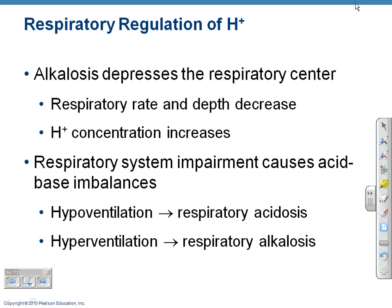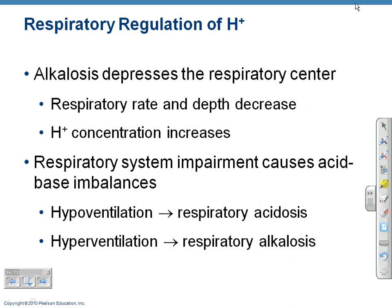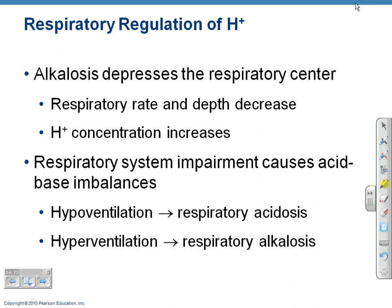Hyperventilation causes respiratory alkalosis — you're releasing too much CO2. Look at the equation: if you get rid of CO2, the whole equation shifts toward the too-basic region, and you reach alkalosis. So hyperventilation causes respiratory alkalosis — too much loss of CO2. Hypoventilation means you're getting too much CO2 in the system. Too much CO2 causes the equation to shift in the direction that liberates hydrogen ions, causing respiratory acidosis.